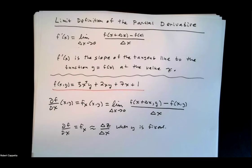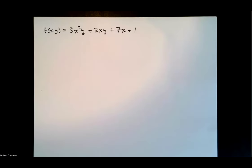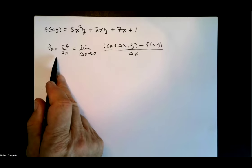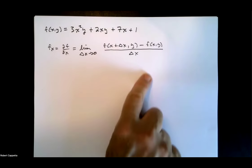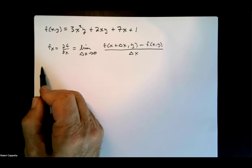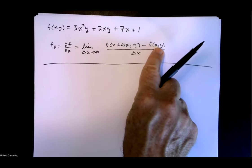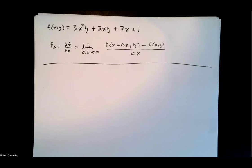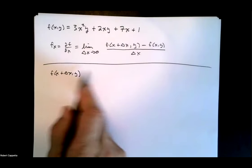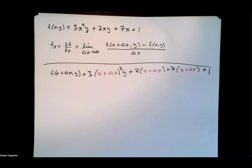Let's go ahead and do that computation for this function using some algebra. We need to find that limit. The partial of f with respect to x is that limit. To make our algebra a little easier, we're going to break this up into pieces. First, I'll evaluate f of x plus delta x, y, then subtract f of x, y, divide by delta x, and take a limit. So piece one is finding f of x plus delta x, y, which requires replacing each x with x plus delta x.